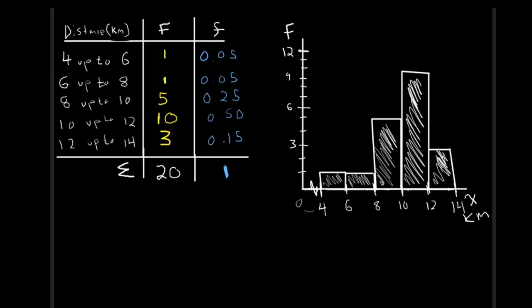So our ogive or cumulative frequency histogram, what this is, is we're just going to accumulate the data as we move through. In order to do this, let's get rid of the histogram that we've already drawn, and let's start again, and we'll start again by updating our frequency table.